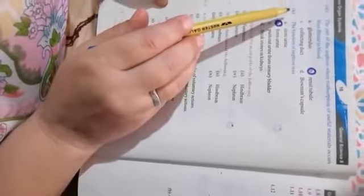Tenth statement: the function of nephron is to option A store urine, B form urine, C push out urine from urinary bladder, D break stones in the kidney. Correct option is B form urine.